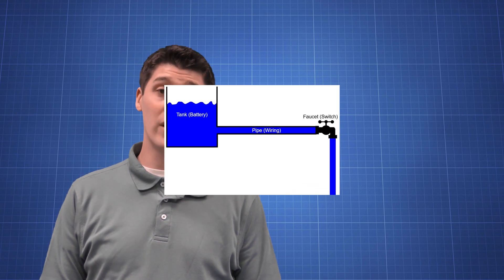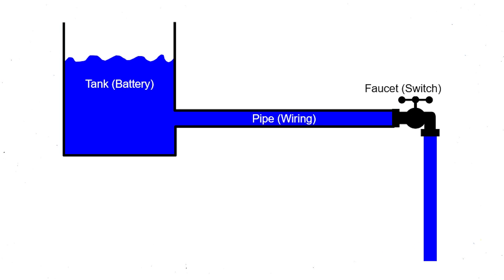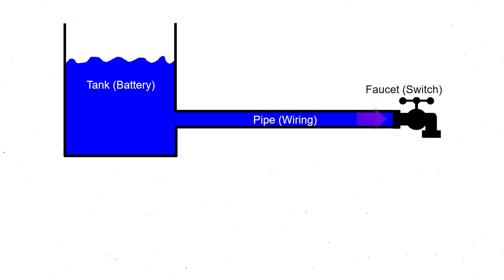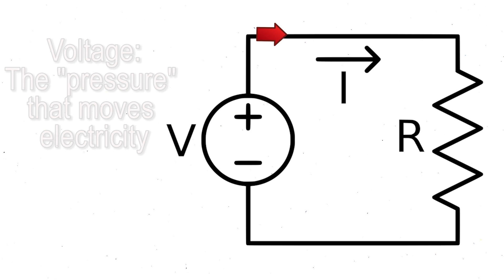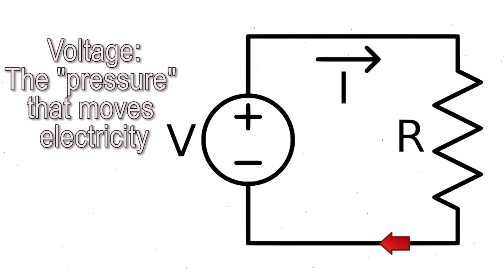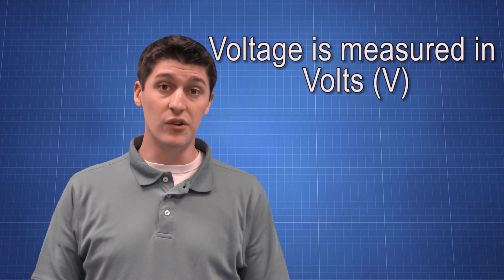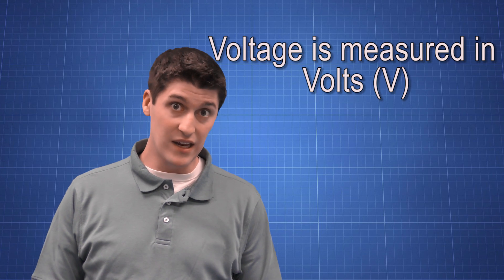So picture a water tank. If we turn the faucet, what makes the water come out? Well, that's pressure. If the faucet is closed, the pressure is still there. Voltage is just like water pressure. It pushes the energy from the electrical source, such as a battery, to where it's needed, and then back to the other end of the battery. We measure voltage in a unit called volts. Crazy naming, right?